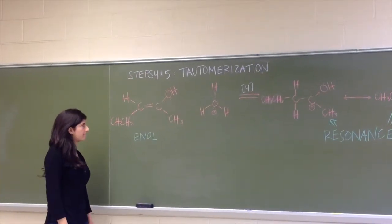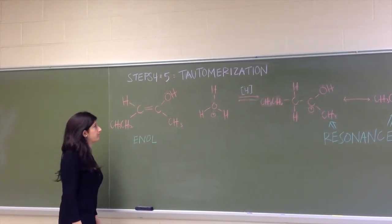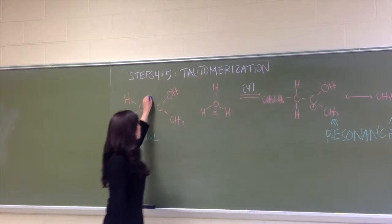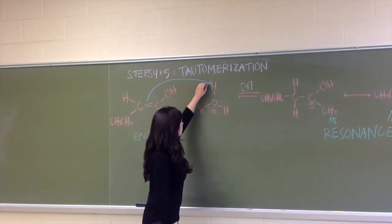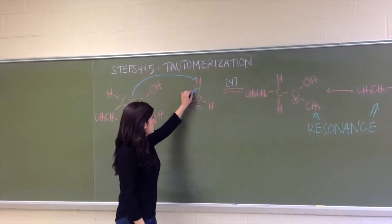Steps four and five of this reaction encompass tautomerization. Protonation occurs when the pi bond of the enol captures a hydrogen from hydronium. Simultaneously, the OH bond breaks, donating the electron pair to oxygen.